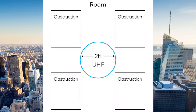Now think of a UHF wave, indicated by a three-foot pole. It moves easily and effectively, indicating how much easier it is for this signal to be transmitted in close-quarter environments.